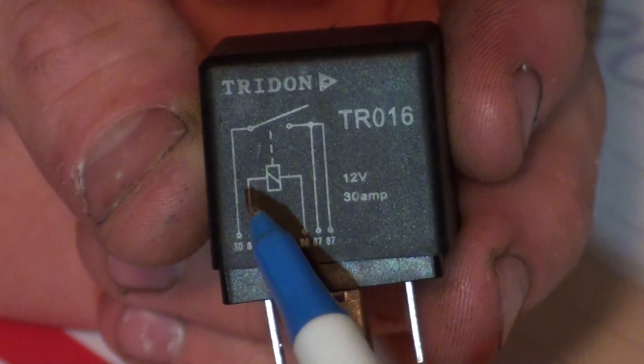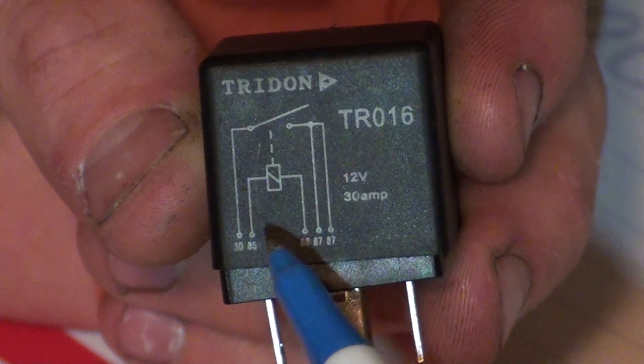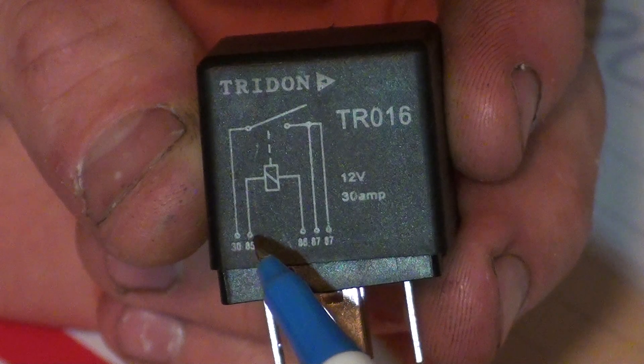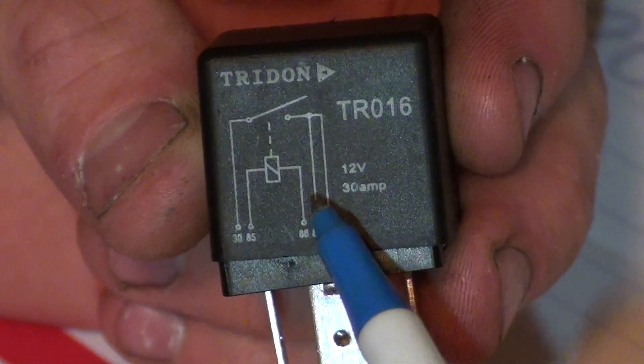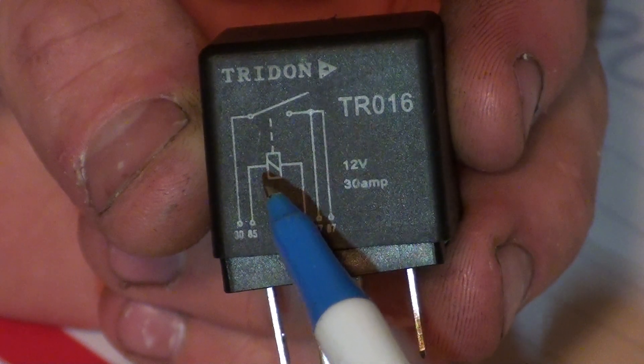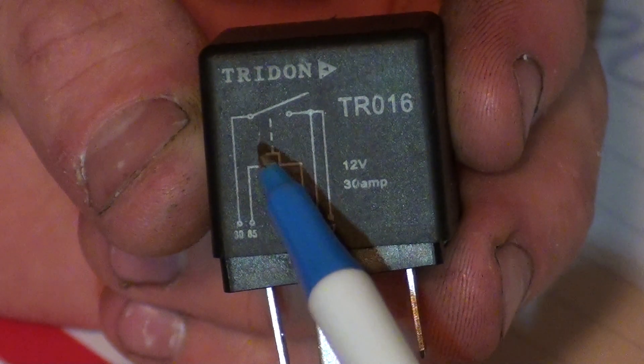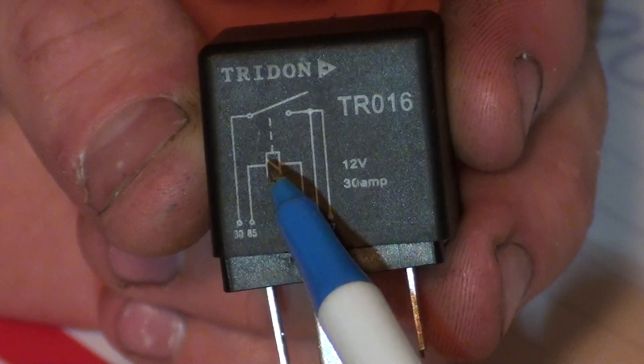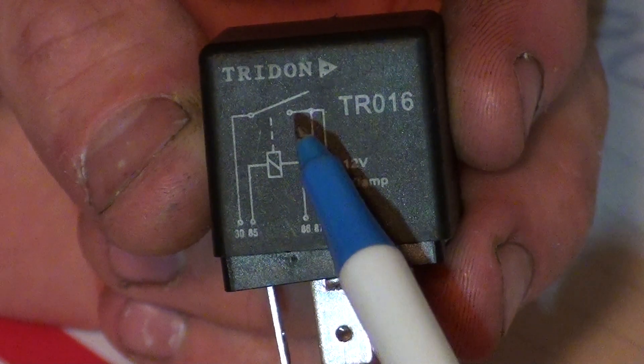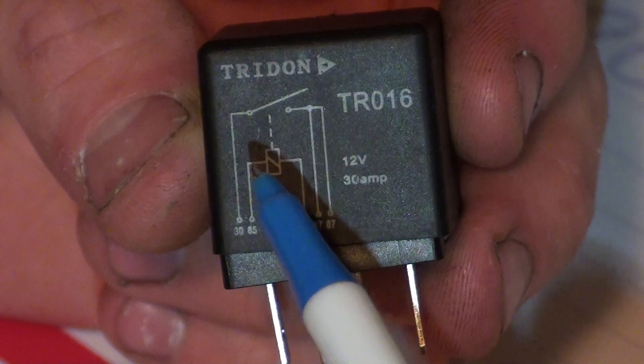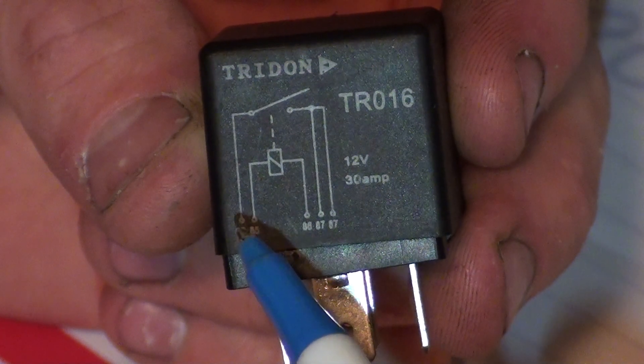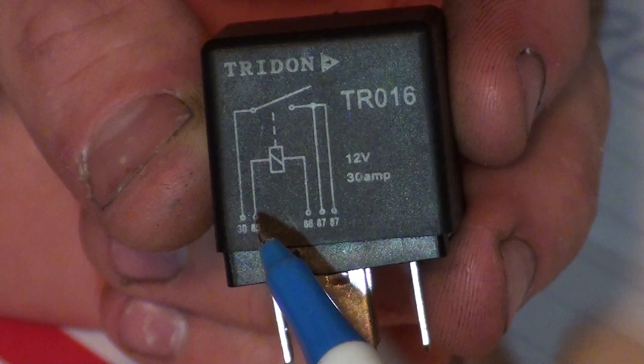So this little diagram here is actually the switching side of the relay. You've got terminal 86 coming up to the coil or wire, which turns into a magnet when voltage is applied, which shuts the switch. And then that comes over to the earth side, and then down to the earth, which is terminal 85.